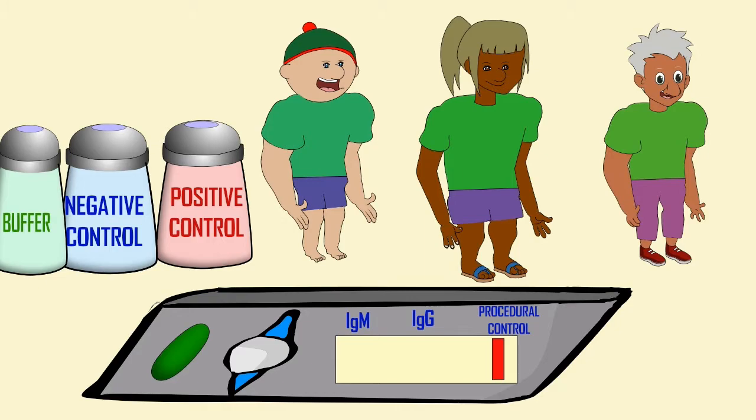In the same way you would want to run a positive control. Here is a sample which should give positive results, let's say in this case for both types of antibody IgM and IgG. You're expecting a positive result. If you do not get a positive result, if you get a negative result, that's a problem.